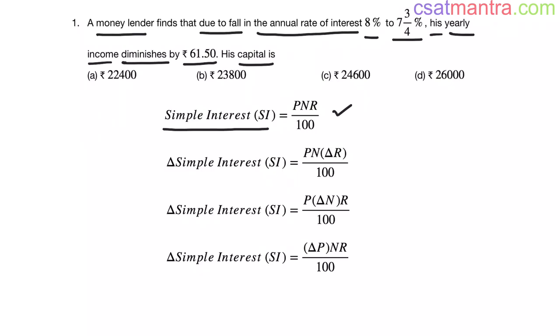Now change in simple interest my friends. When principal and number of years is constant and when rate of interest is changing, then change in simple interest is equal to PN delta R by 100. This change is happening only because of change in rate of interest. P and N are constant here.